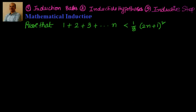Hi, welcome back! We are solving examples as part of mathematical induction. Till now we have seen examples which involve equality between the LHS and RHS. For the first time we will look at an example where we are talking about inequality. We have to prove that 1 plus 2 plus 3 up to n terms is less than 1/8 times (2n+1) whole square.